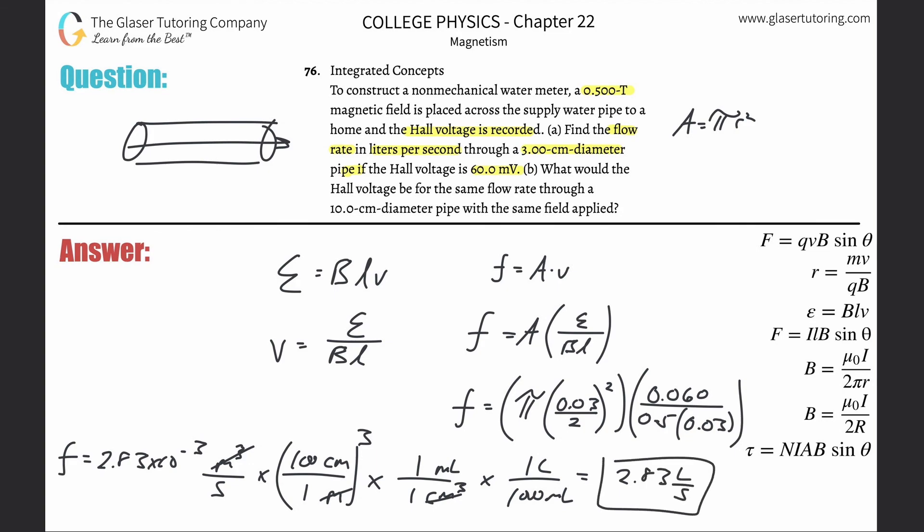Okay, now let's take a look at letter B. So what would the Hall voltage be for the same flow rate through a 10 centimeter diameter pipe?